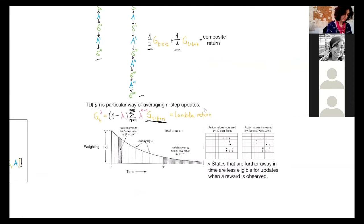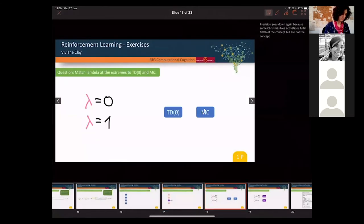And lambda is in the range of 0 and 1. And at one of the extremes, so if lambda is 0, it is one of, so at one of either of the extremes is either TD 0 or Monte Carlo. And I was going to ask you if you can figure out which of the extremes corresponds to which of the algorithms that we already talked about.